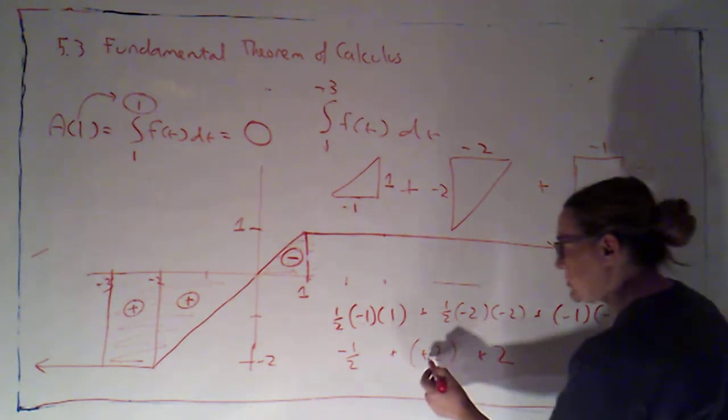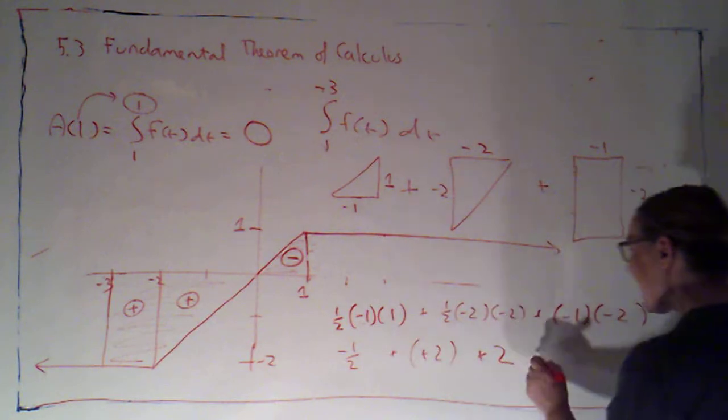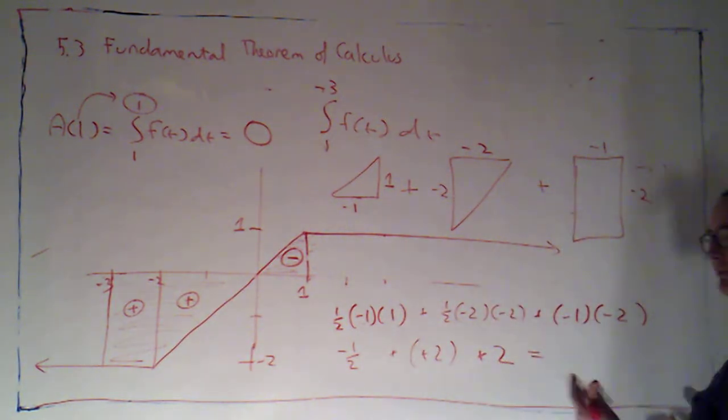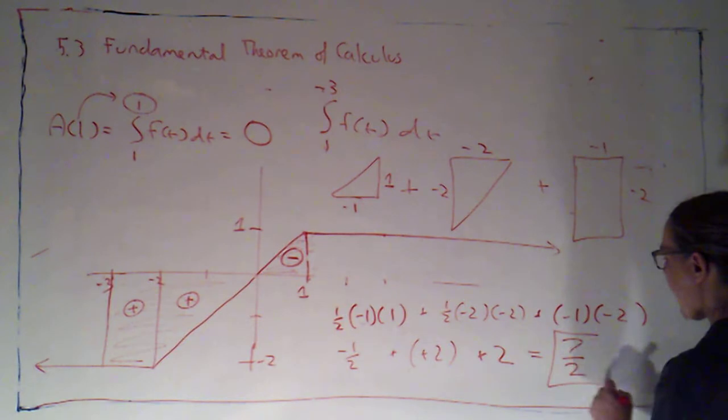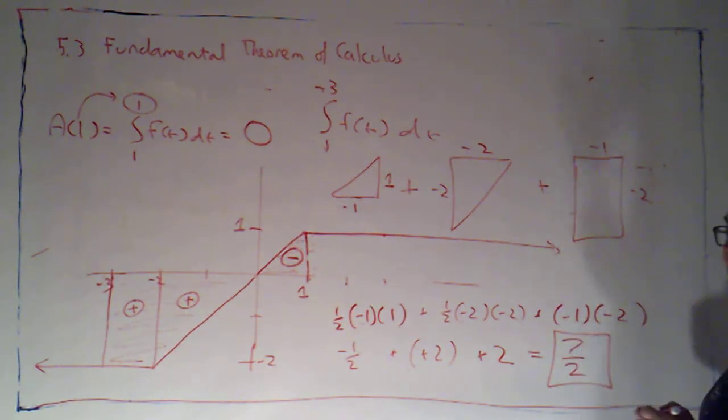This is going to give me a negative 1 times a negative 2 which is positive 2. So we end up with 2 plus 2 is 4 plus a negative 1 half so we've got 3 and a half or 7 halves would be that value of the area function. Kind of neat.